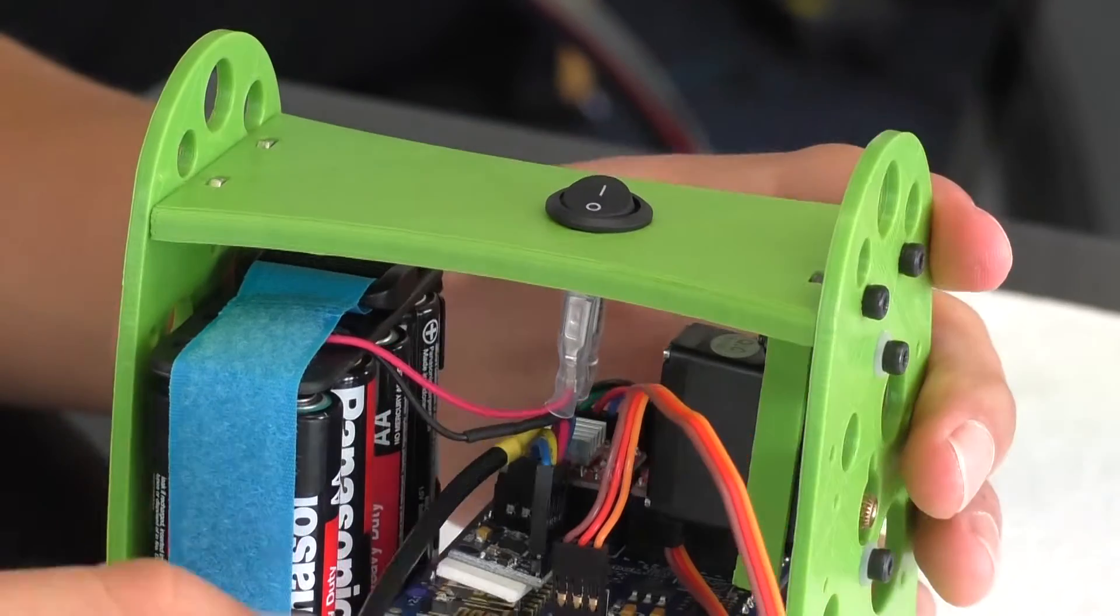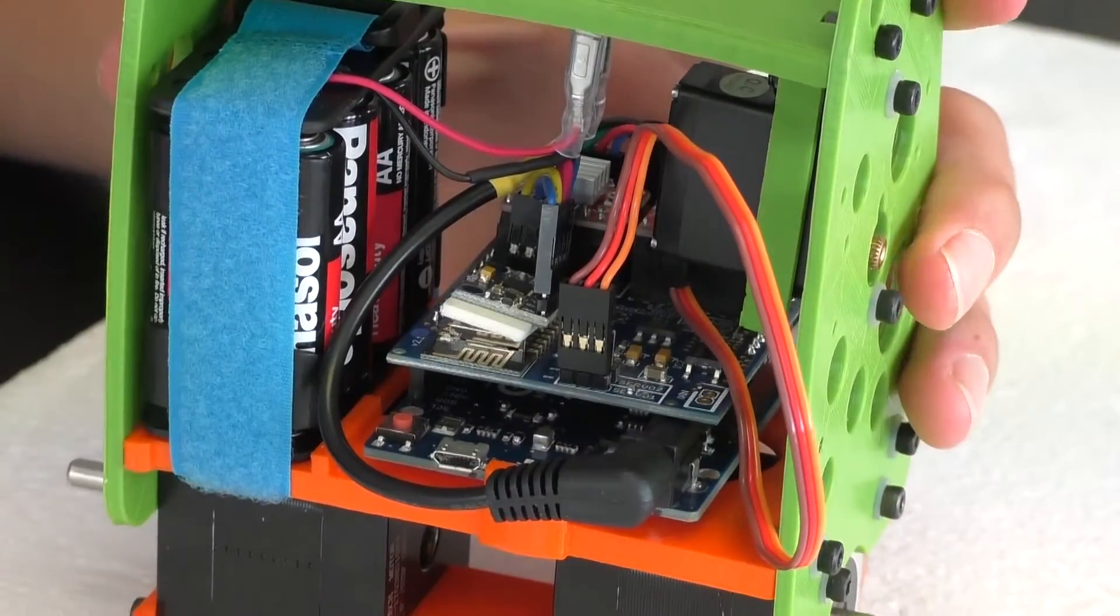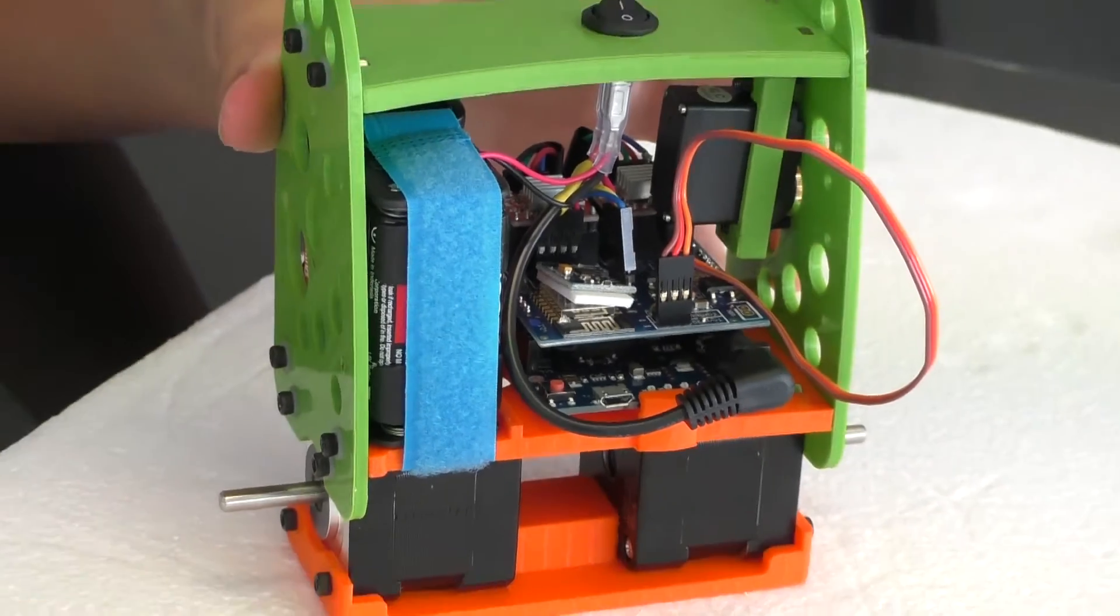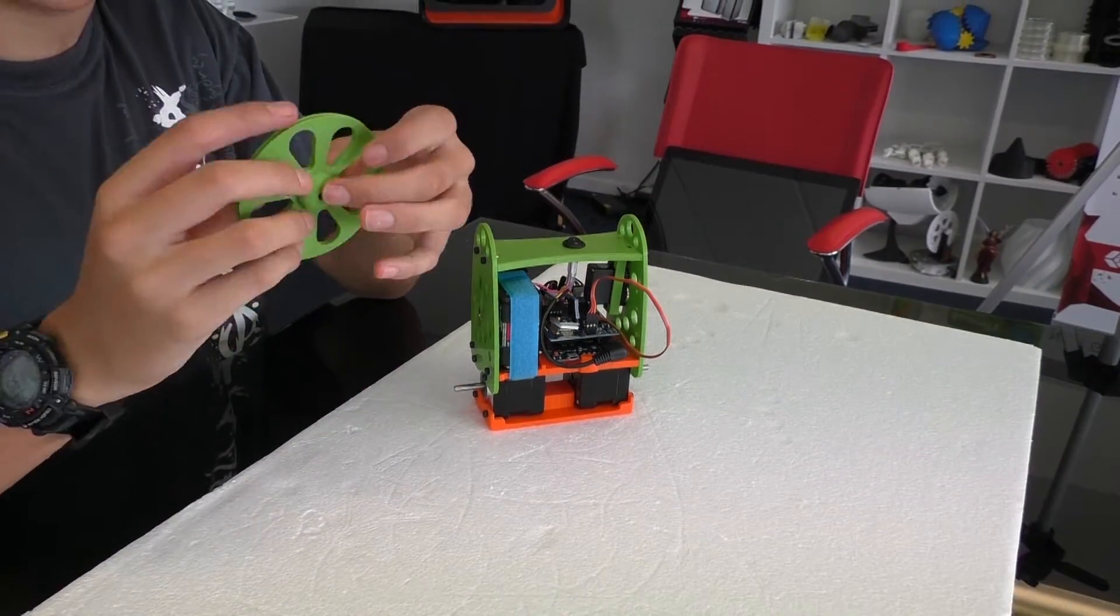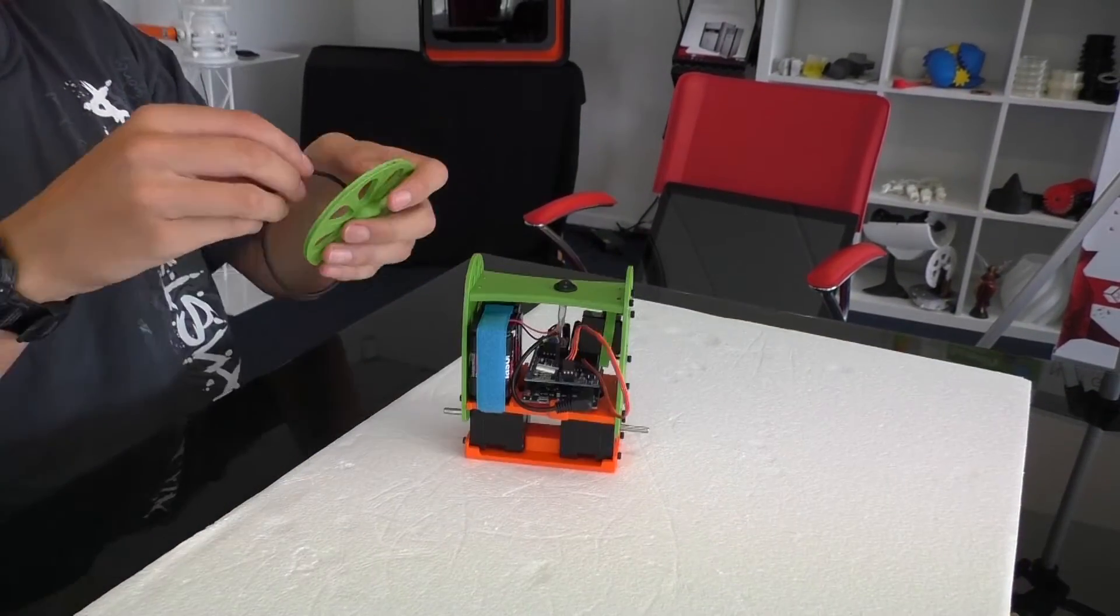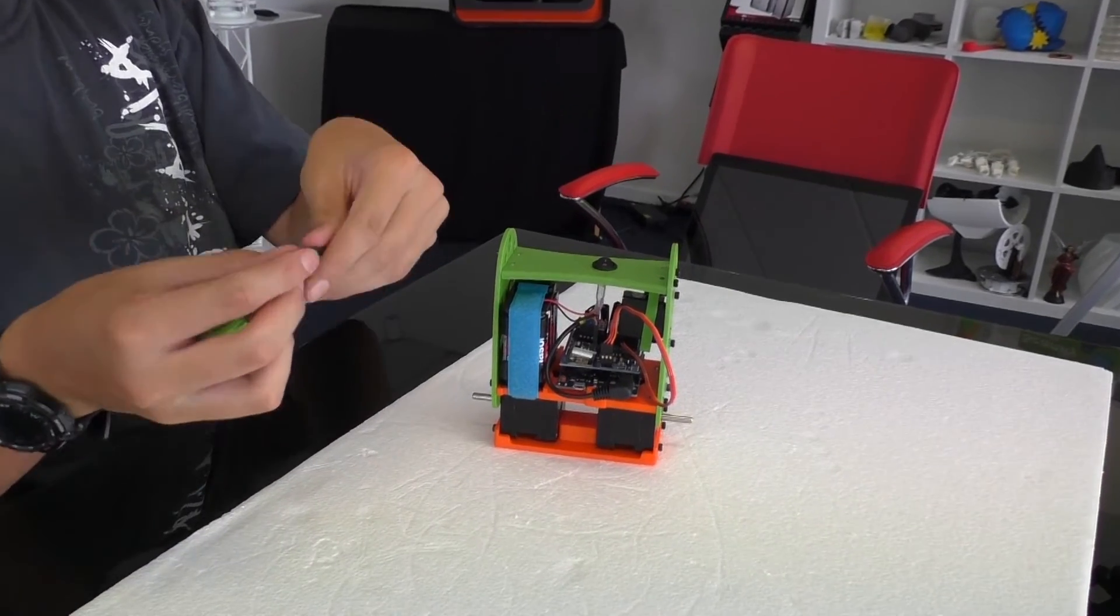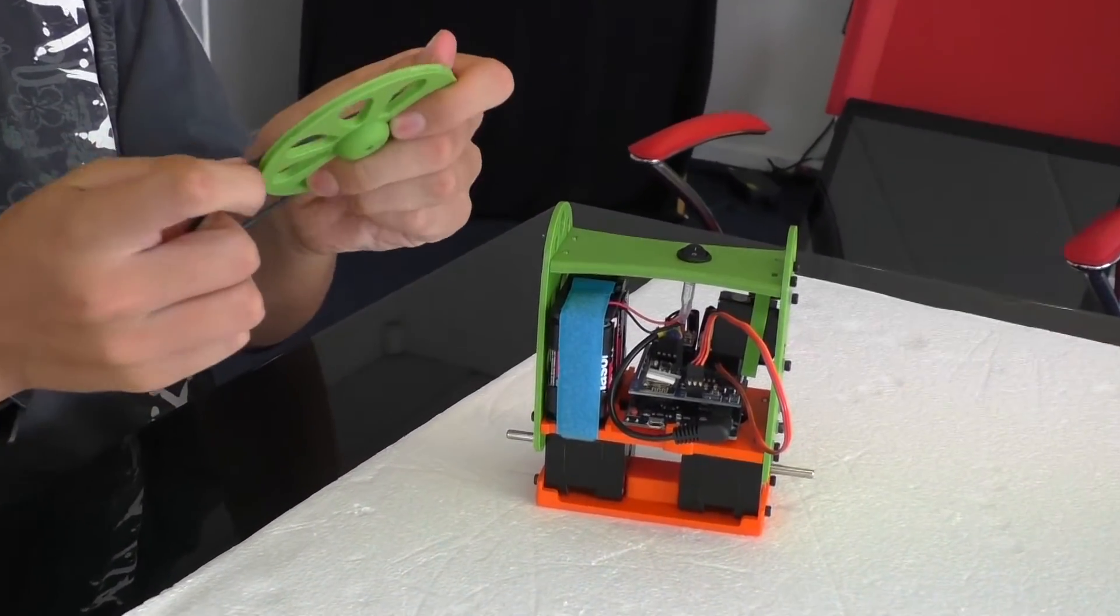Next, we need to plug in the batteries to the battery slot. And now, we need to attach the wheels. Amazing 3D printed wheels. To put on the tires, simply put it around, hold it, and stretch it around.